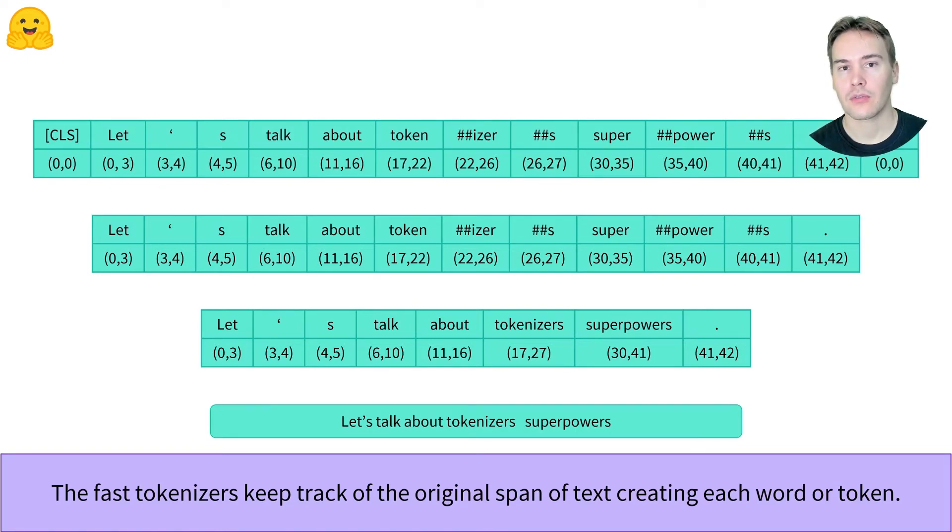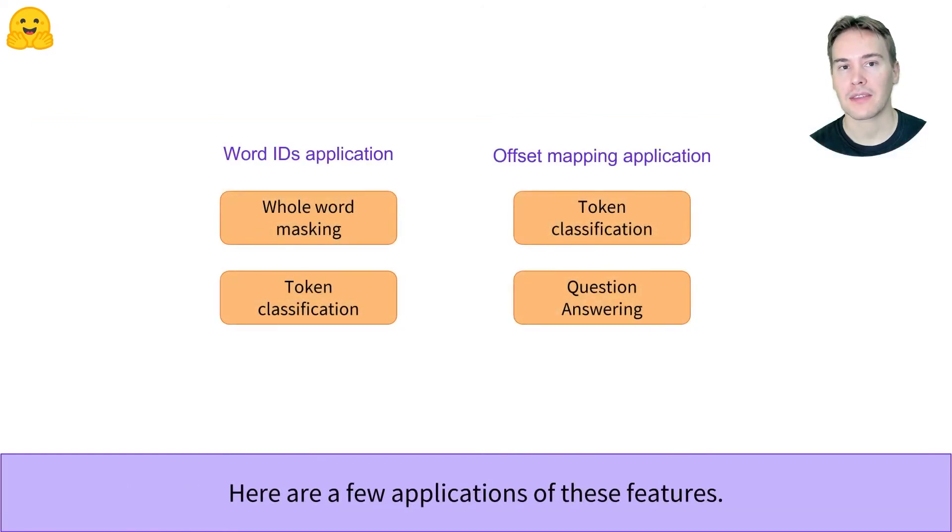We will see how useful it is when we tackle the following tasks. When doing masked language modeling, one variation that gets state-of-the-art results is to mask all the tokens of a given word instead of randomly chosen tokens. This will require us to use the word IDs we saw.